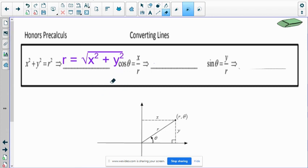The other conversion is if we were to write out the cosine, we would have x over r.